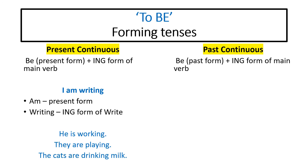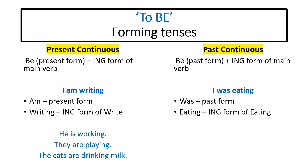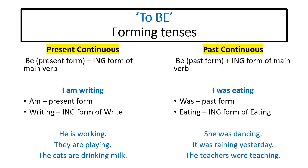In past continuous tense, only the past form of the 'be' verb is used, and with it the ing form of the main verb. For example: 'I was eating.' Here the past form of 'to be' — 'was' — is used, and 'eating' is the ing form of main verb 'eat'. More examples: 'She was dancing', 'It was raining', 'Yesterday the teachers were teaching.' In each case, the past form of 'to be' — was, were — is used, followed by the ing form of the main verb: dancing, raining, teaching.